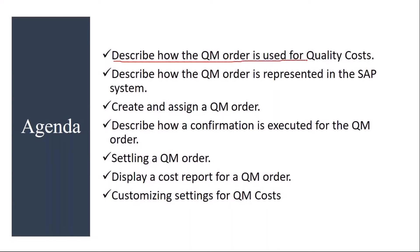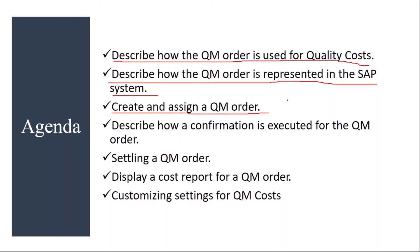We'll understand how the QM order is used to capture quality costs. We'll also understand how the QM order is represented in the SAP system — how it is created and how it is used. Then we will create a QM order and assign it to the material. We'll also describe how a confirmation is exhibited for the QM order, meaning how the activities are confirmed in the system to capture quality costs.